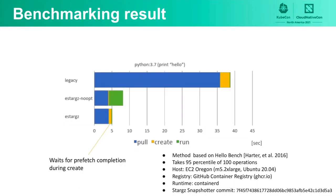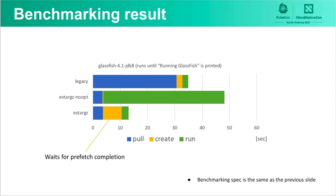This shows the time to take for startup of a Python 3.7 image among three types of formats. Legacy images cannot start a container before the entire image contents become locally available, so startup takes accordingly. eStargz no-opt is eStargz image without prefetch optimization. This shortens the time to take for startup, but there is a random performance drawback because of the overhead of on-demand fetching. eStargz can mitigate this by prefetching. A GlassFish server image also shows performance improvement of pull by eStargz image, and optimized eStargz mitigates the runtime performance drawback of on-demand fetching.